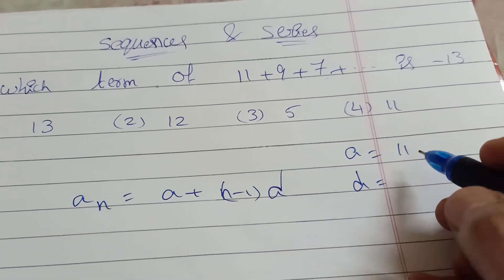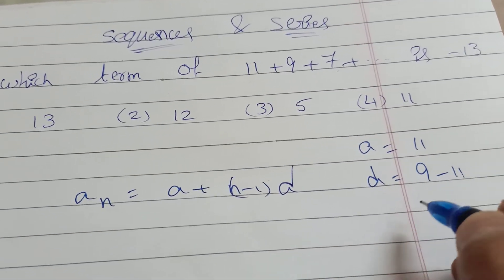d equals a2 minus a1, which is 9 minus 11, equals minus 2.